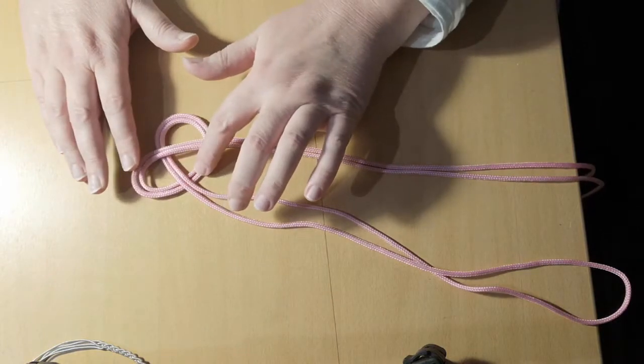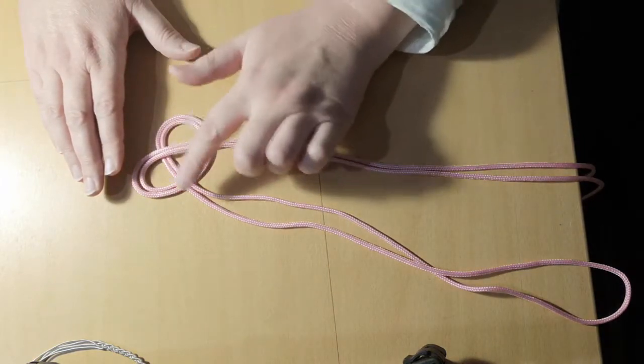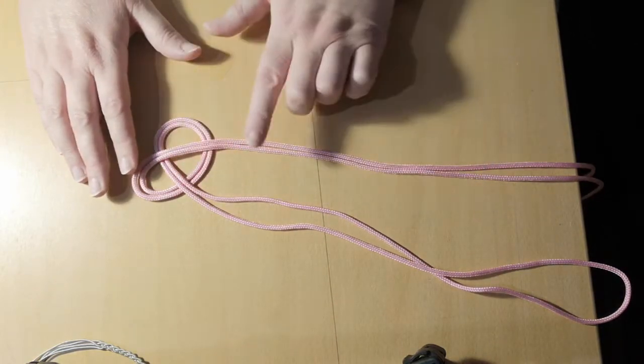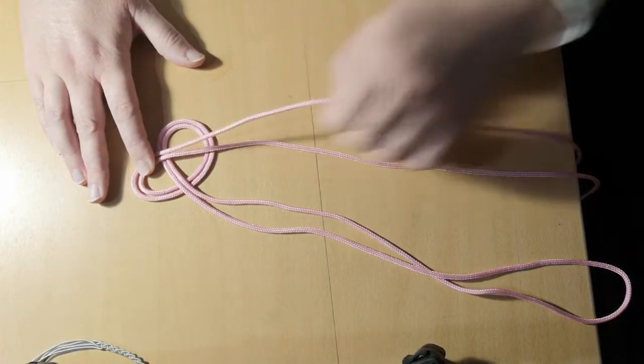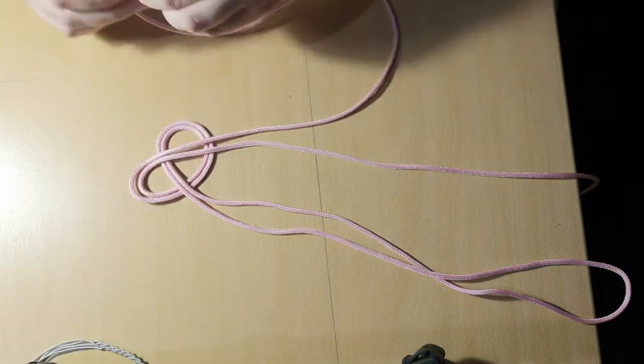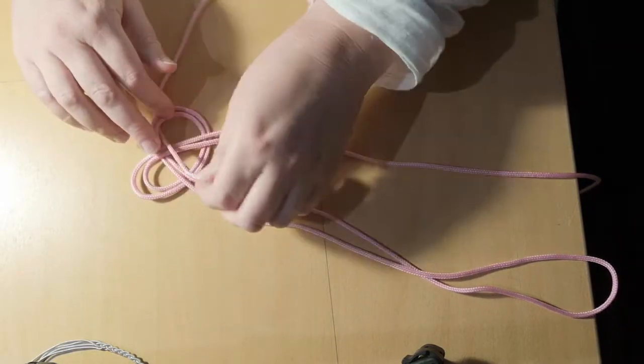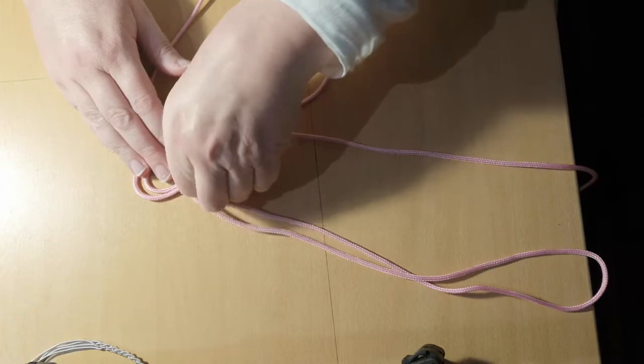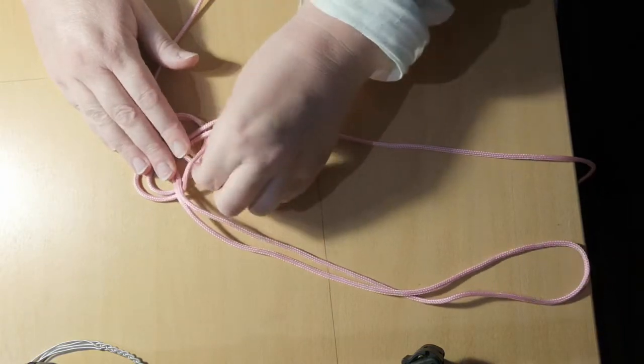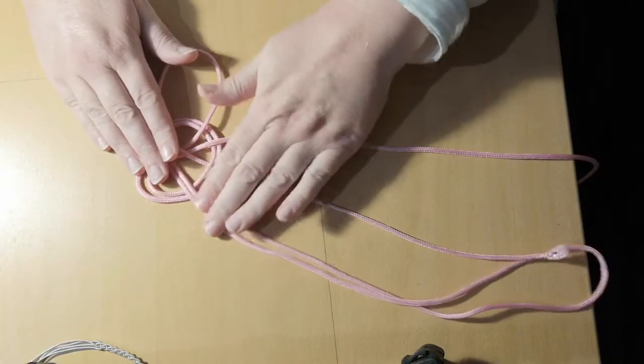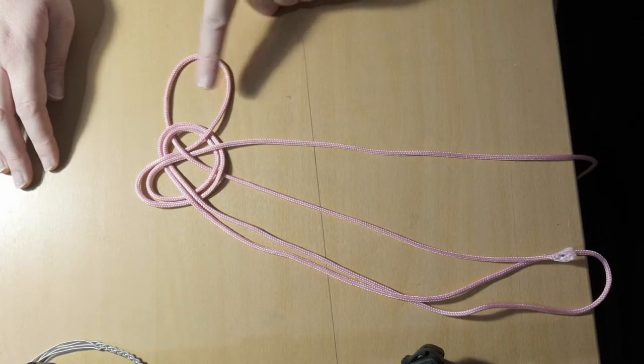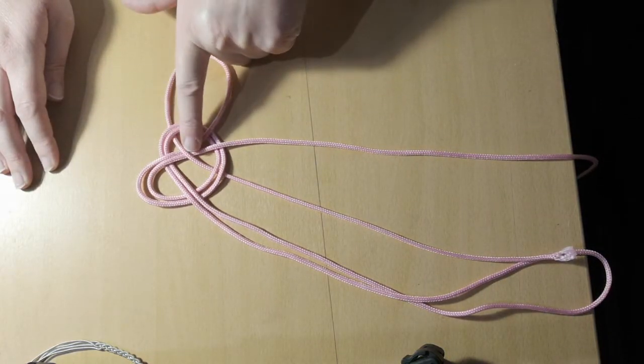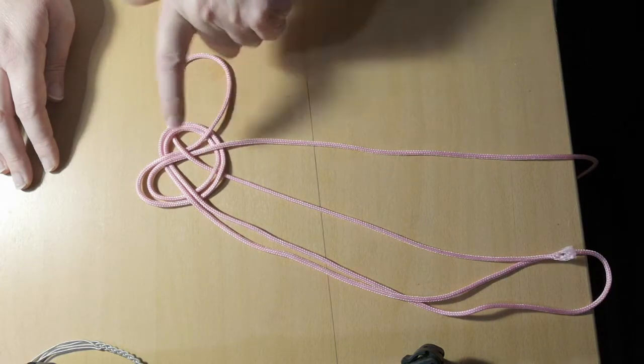So this is going to be your lower loop and these two strands are going to be your upper loop. So what we now do is that we take this and go under, over and under. So you see that this strand goes under there, over there and under there. So up in the hole, down in the hole.